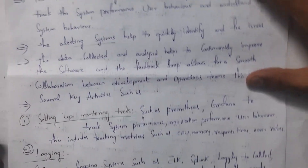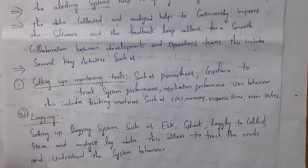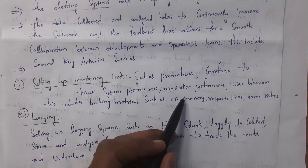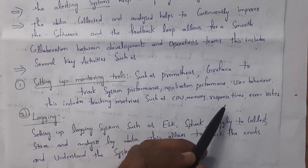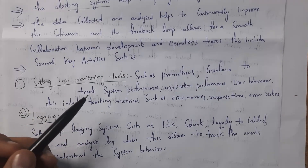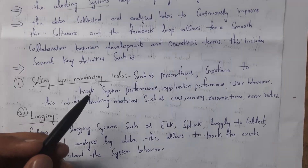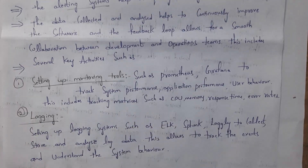The development team and operations team interact with each other and take regular feedback on how the software is working. These are the various activities in the monitoring stage. The first one is setting up monitoring tools. In software companies, there is a separate team to monitor software performance — how much memory the software consumes, how much CPU power it uses, what is the response time, error rates, system performance, and user behavior. In DevOps, tools like Prometheus and Grafana are used for this.